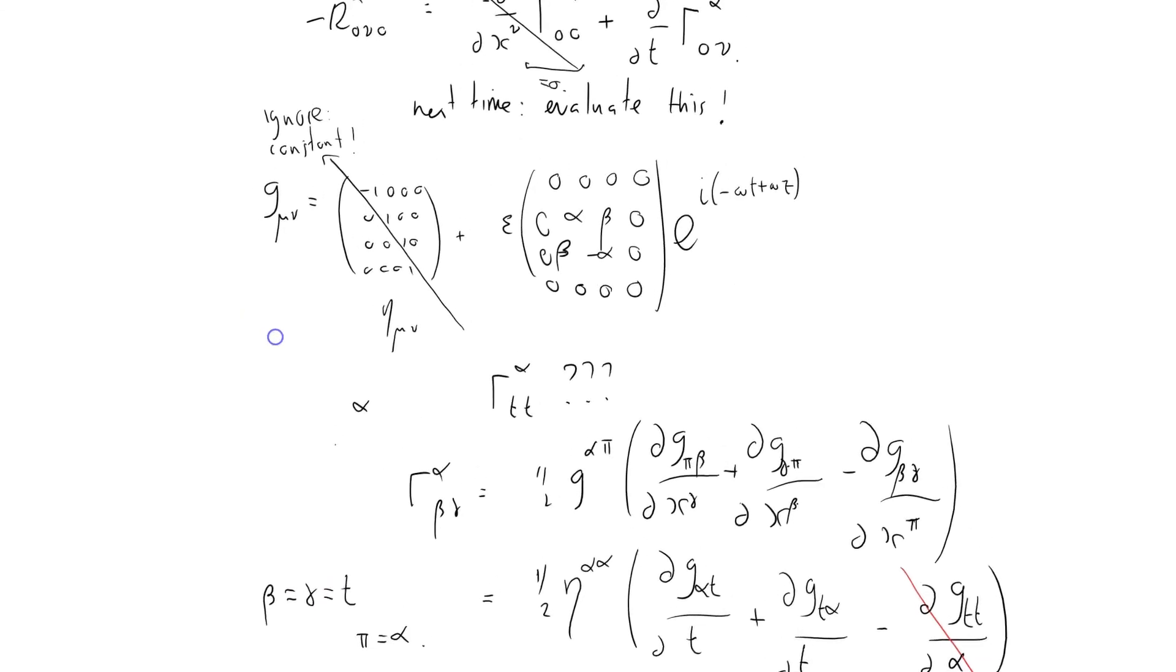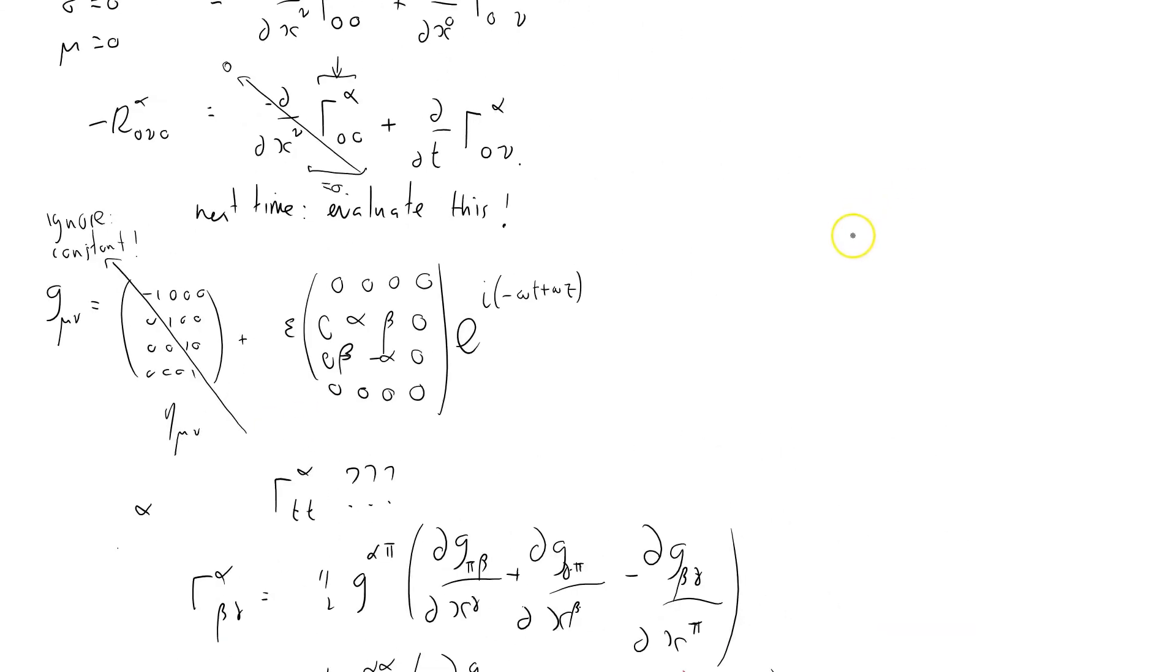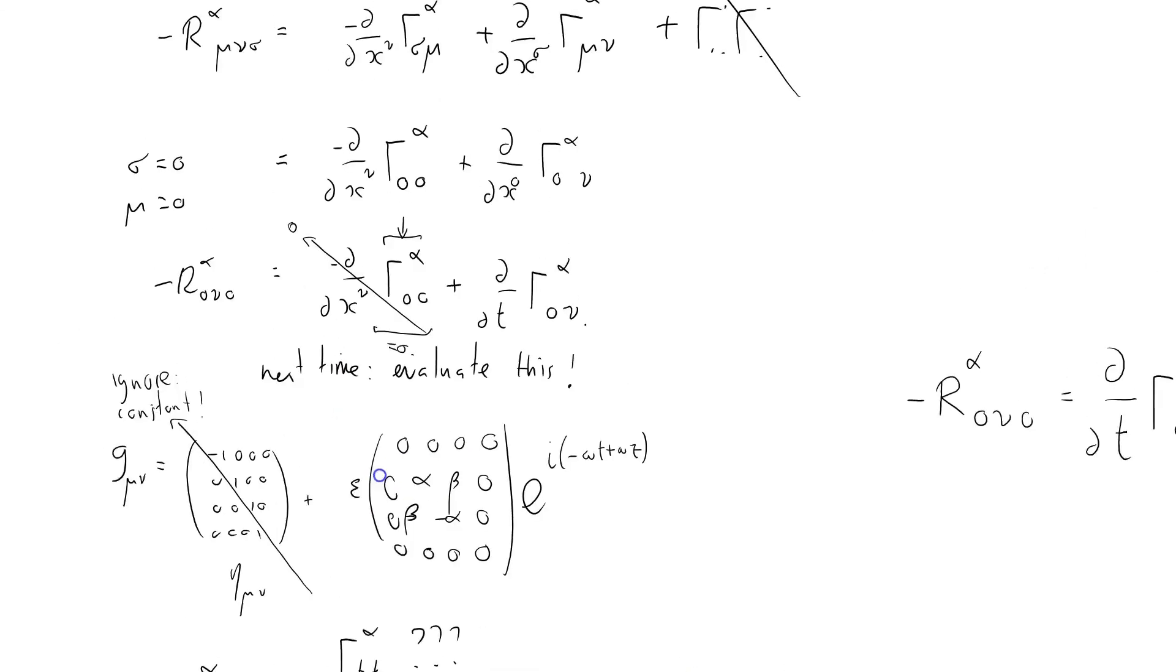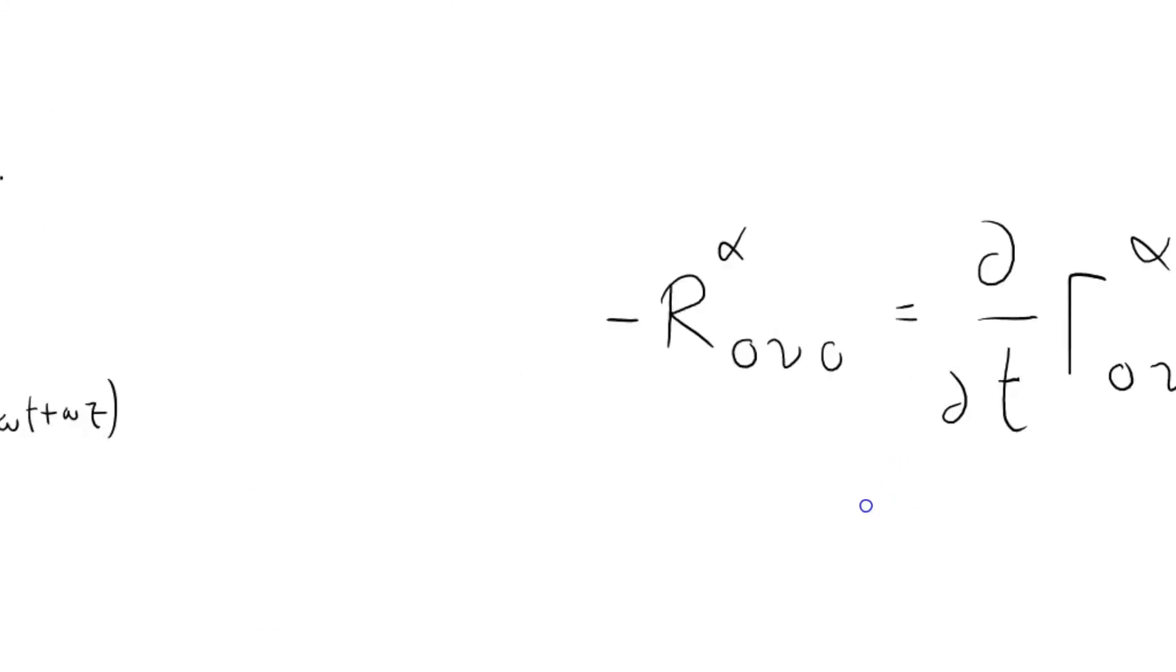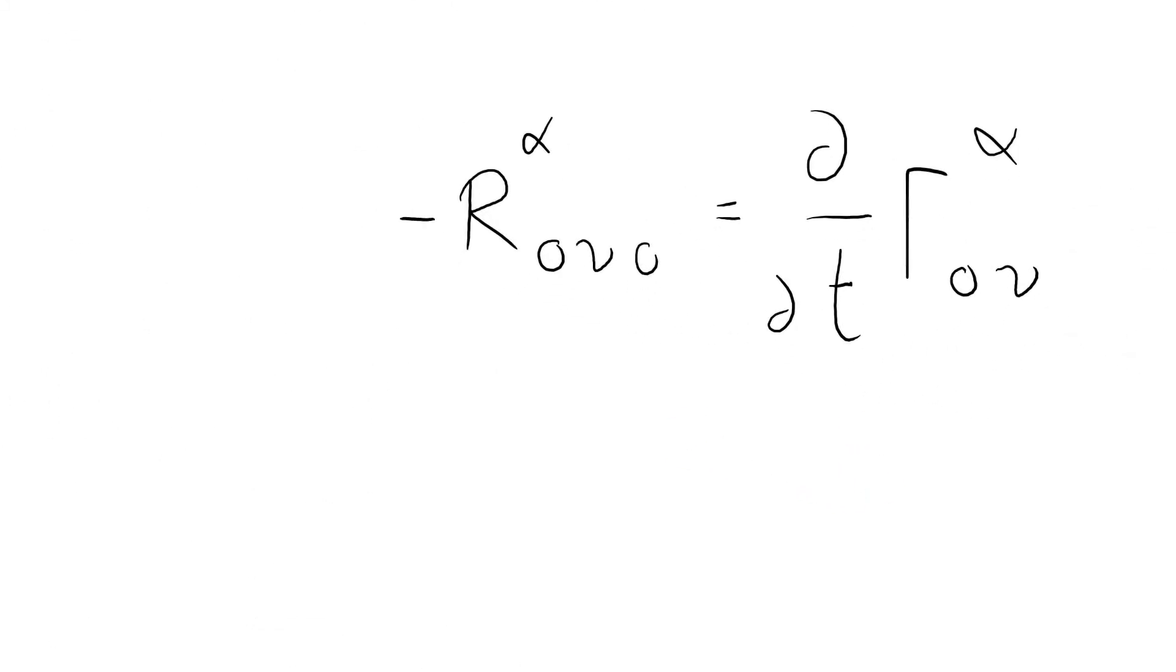So now we have ∂/∂t of this term here, which doesn't look quite as easy. Let me copy that one out. We need -R^α_{0ν0} = ∂/∂t Γ^α_{0ν}. I'll do that in the next screencast. We need to work out that to calculate the tidal acceleration as a result of a gravitational wave passing. I'm going to stop there.